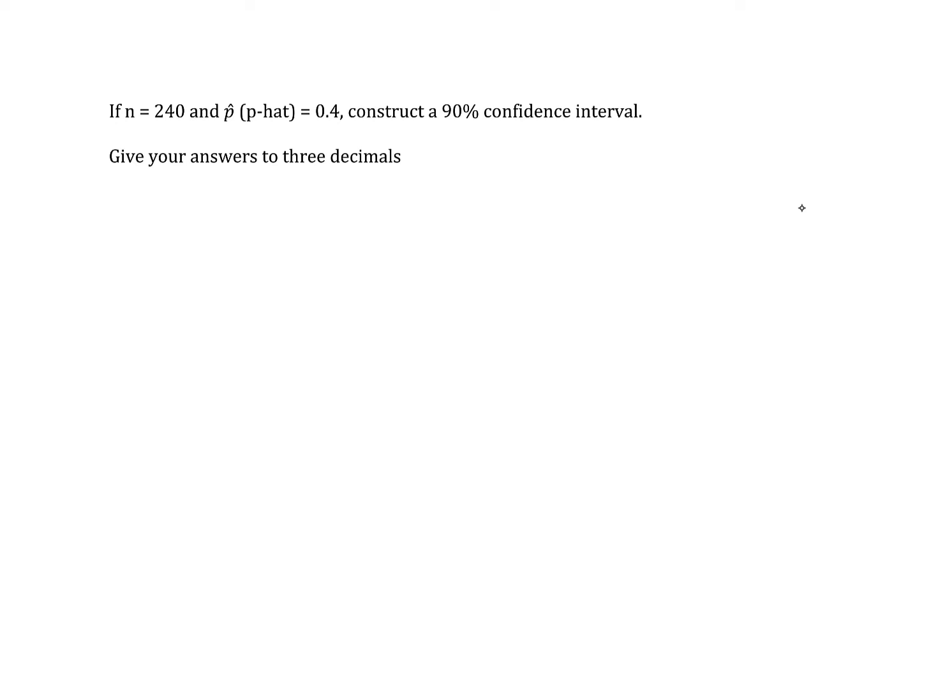If n equals 240 and p-hat equals 0.4, construct a 90% confidence interval. Give your answers to three decimal places. In order to do this, we can either use formulas or we can use the calculator. I'm going to start with the calculator because that's the simplest method and what I expect most students probably use.